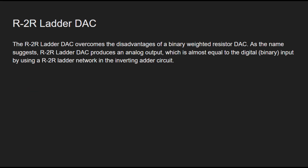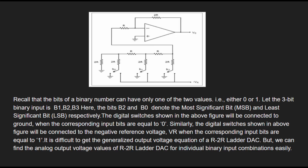The second type is the R2R ladder DAC. The R2R DAC overcomes the disadvantages of the binary weighted resistor DAC. As the name suggests, the R2R ladder DAC produces an analog output which is almost equal to the digital input by using an R2R ladder network in the inverting adder circuit. The bits of binary numbers can have only one of two values: either 0 or 1. Let the 3-bit binary input be b1, b2, b3.